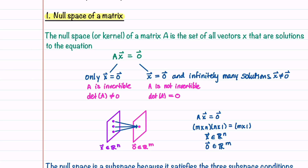Let's begin by talking about the null space of a matrix. The null space or kernel of a matrix A is the set of all vectors x that are solutions to the equation Ax = 0. If matrix A is invertible, meaning its determinant is not equal to zero, then the only solution to Ax = 0 is x = 0. If A is not invertible, meaning its determinant equals zero, then Ax = 0 has the trivial solution x = 0 and infinitely many non-trivial solutions. Because A is an m by n matrix, x is an element of R^n and the zero vector is an element of R^m. All vectors x in R^n map to the zero vector in R^m.